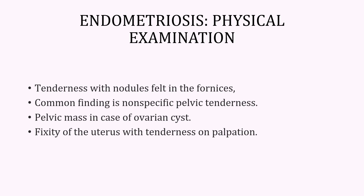On physical examination, you may not be able to get many findings, but some may be present in the form of mild to moderate tenderness in the lower abdomen on abdominal palpation, and an abdominal mass if there are large endometriotic cysts. On vaginal examination, there will be tenderness with nodules felt in the fornices, there may be generalized non-specific pelvic tenderness, and there may be fixity of the uterus with tenderness on palpation — in other words, the uterus is not very movable on manual palpation.